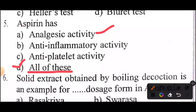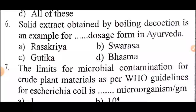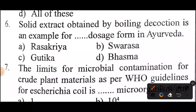Aspirin has the following activities: Option A — analgesic activity; Option B — anti-inflammatory activity; Option C — anti-platelet activity. Question on Ayurvedic dosage forms: Boiling decoction is an example of a dash dosage form in Ayurveda. Answer: Option B — Shvarsha.